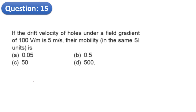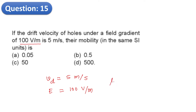Question 15: If the drift velocity of holes under a field gradient of 100 V/m is 5 m/s, what is the mobility? Vd is 5 m/s and E is 100 V/m. Mobility equals Vd divided by E, which is 5/100 = 0.05 m²/V·s. The correct answer is A.